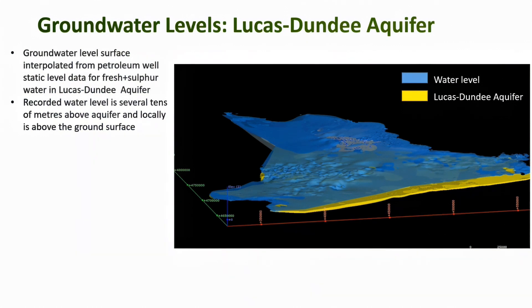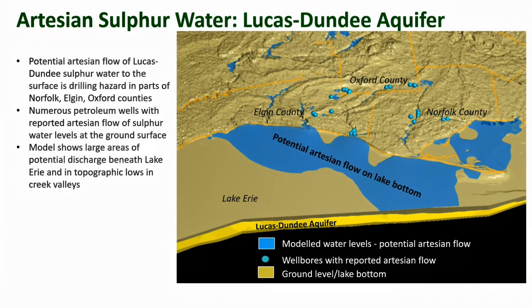We have been able to construct groundwater level surfaces for four of the principal confined bedrock aquifers in Southern Ontario, though none of these surfaces are corrected for salinity. The example shown is for static level data recorded in petroleum wells for the freshwater plus sulfur water intervals, with brine data excluded. The recorded water level is several tens of meters above the aquifer and locally above the ground surface. Potential artesian flow of Lucas-Dundee sulfur water to the surface is a drilling and environmental hazard in parts of Norfolk, Elgin, and Oxford counties, with large areas of potential discharge beneath Lake Erie and topographic lows in creek valleys.